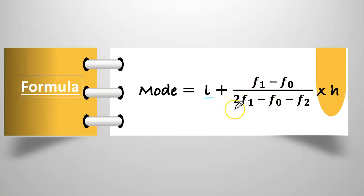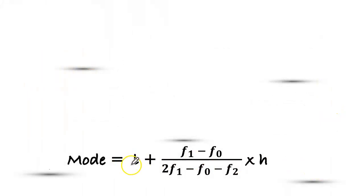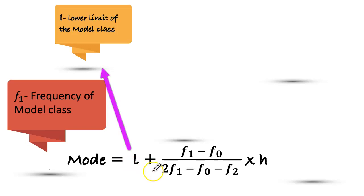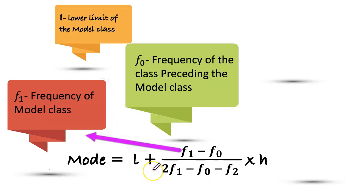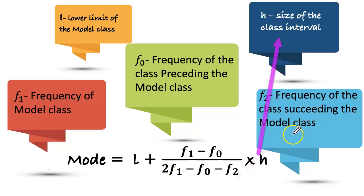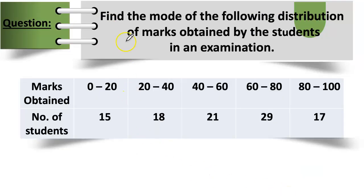Mode equals L plus (f1 minus f0) divided by (2 times f1 minus f0 minus f2), into h. Here, L stands for the lower limit of the modal class, f1 is the frequency of the modal class, f0 is the frequency of the class preceding the modal class, f2 is the frequency of the class succeeding the modal class, and h is the size of the class interval.